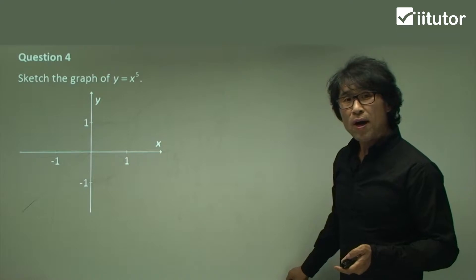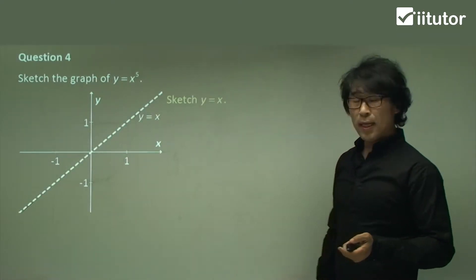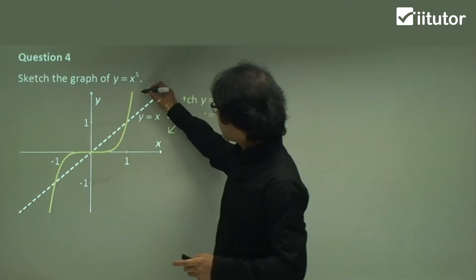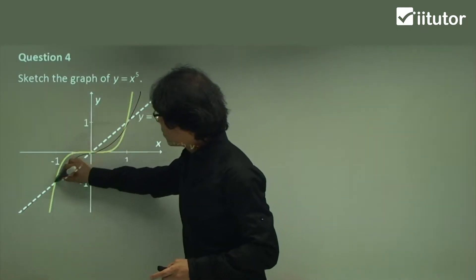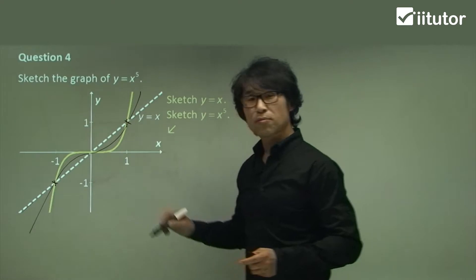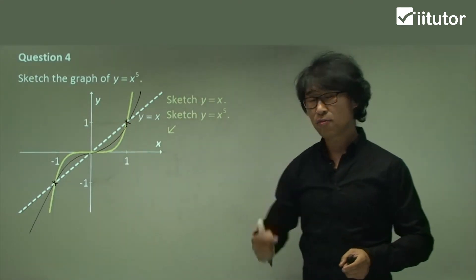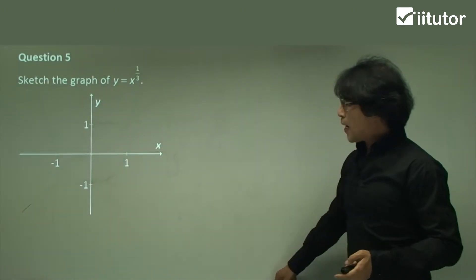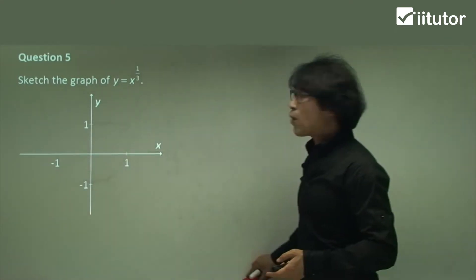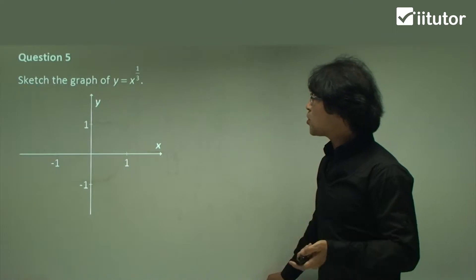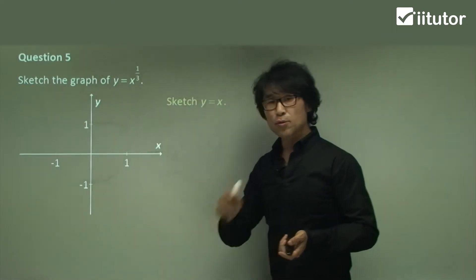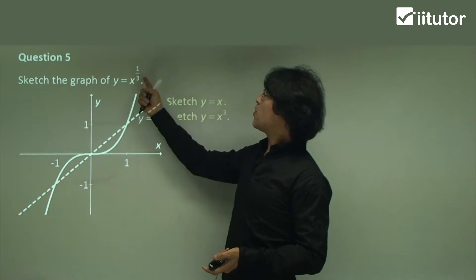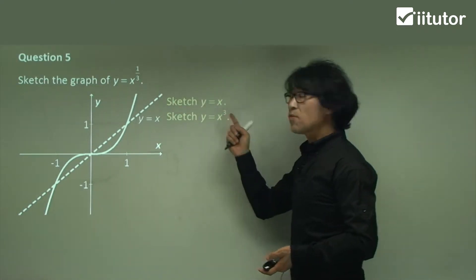Question 4: y equals x to the power of 5. Similarly, sketch y equals x, then sketch x to the power of 5. The x³ graph sits somewhere in the middle, but both must pass through 1 and negative 1. This is still an odd power. Question 5: rational power — so x to the power of 1 over 3. You probably have to sketch y equals x to the cube first. Here we sketch x cubed, and 1 over 3 is the inverse function of x to the 3.